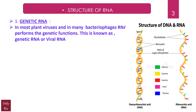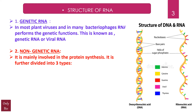This is known as genetic RNA or viral RNA. This simply means that it carries genetic information, unlike in our case where the genetic information is present in the DNA and not in the RNA. So in our case, RNA will be categorized as non-genetic RNA. This non-genetic RNA is mainly involved in protein synthesis and is further divided into three types.